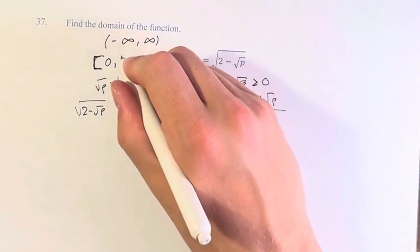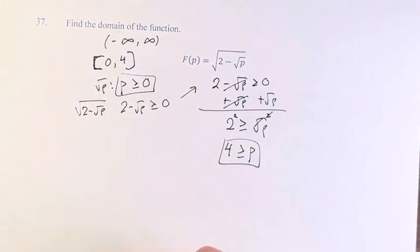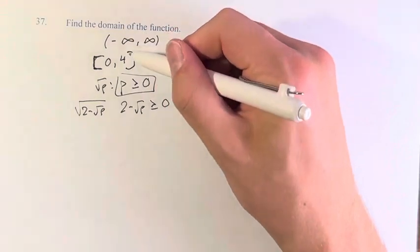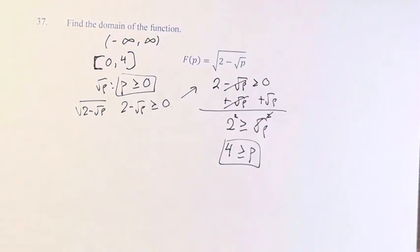It can go up to 4, but then once we go beyond 4, it's also invalid because it has to be less than or equal to 4. So this or this are the two ways of representing the function's domain f of p: 0 to 4, inclusive.